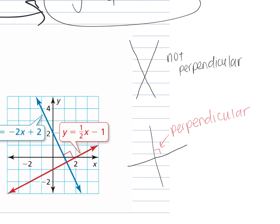Do you notice any perpendicular angles in this classroom? The ceiling tiles are all perfect right angles — they're perpendicular. The edges of the floor, the screen on the board — it's a perfect corner. Signs that are squares or rectangles are all perpendicular. Even the cross up on top forms perpendicular lines. They must form a 90-degree angle.